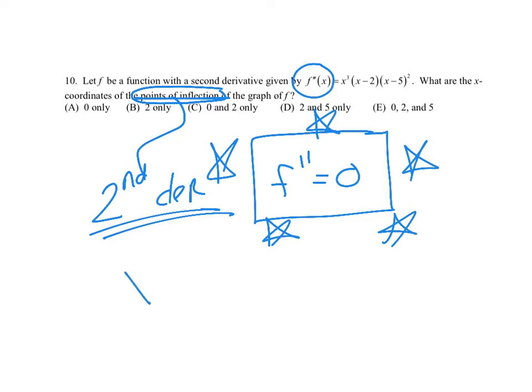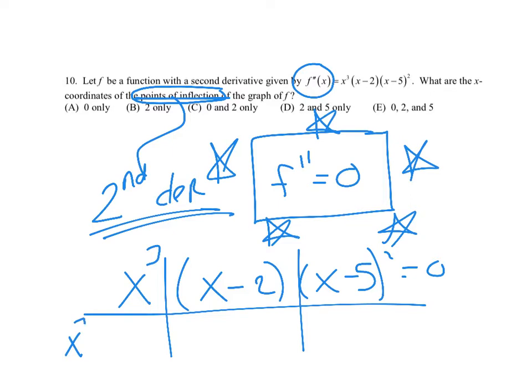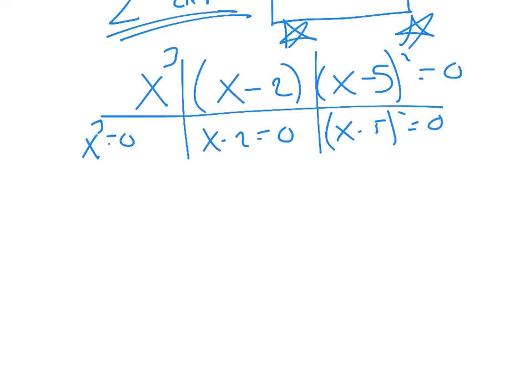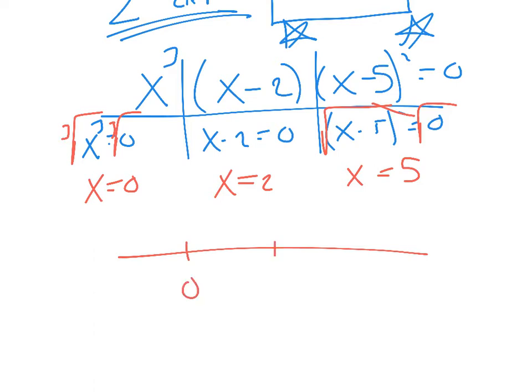Whether you're setting the first derivative equal to zero, the velocity equal to zero, the second derivative, we've got to make sure we're showing that because we are going to lose a point. So I'm setting this derivative equal to zero. So I've got x cubed, x minus two, and x minus five squared equals zero. It's already factored, so I'm just teeing it up. So x cubed equals zero, x minus two equals zero, x minus five squared equals zero. So take the cube root of both sides, and you should get x equals zero, x equals two, and x equals five.